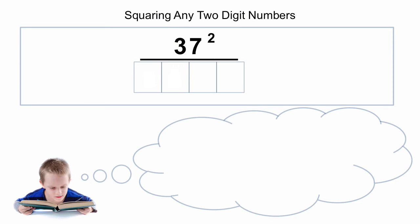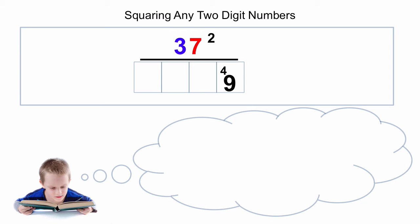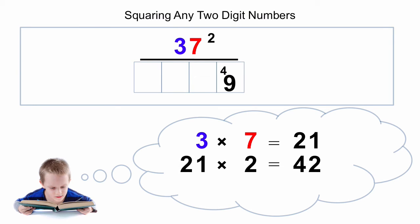Now let's have a look at the general case for squaring any two-digit numbers. We start with the units: we have 7, so 7 squared is 49. We put the 9 and carry the 4. The second step is to multiply the tens digit by the units digit — so in this case 3 times 7 is 21. We now double that answer: 21 times 2 is 42. Then we add the carry: 42 plus 4 is 46. So we write down the 6 and carry the 4.